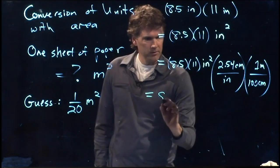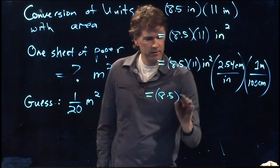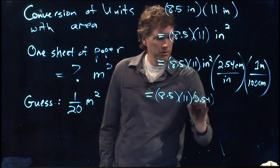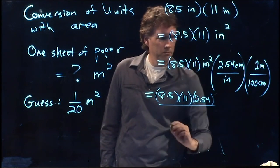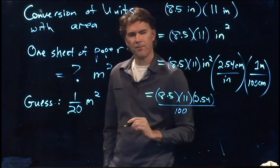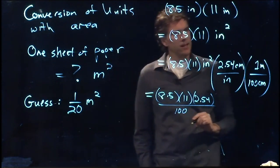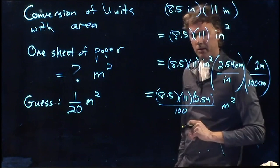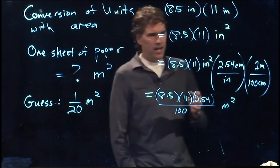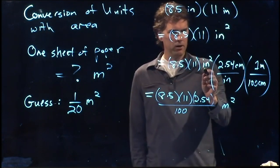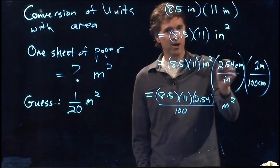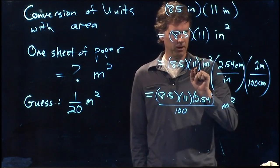So we've got 8.5 times 11 times 2.54. And we're going to divide by 100. And it looks like we're going to end up with square meters. We had inches squared. But down here, we only had inches. So I could cross out one of them, but then I would still be left with inches up there.